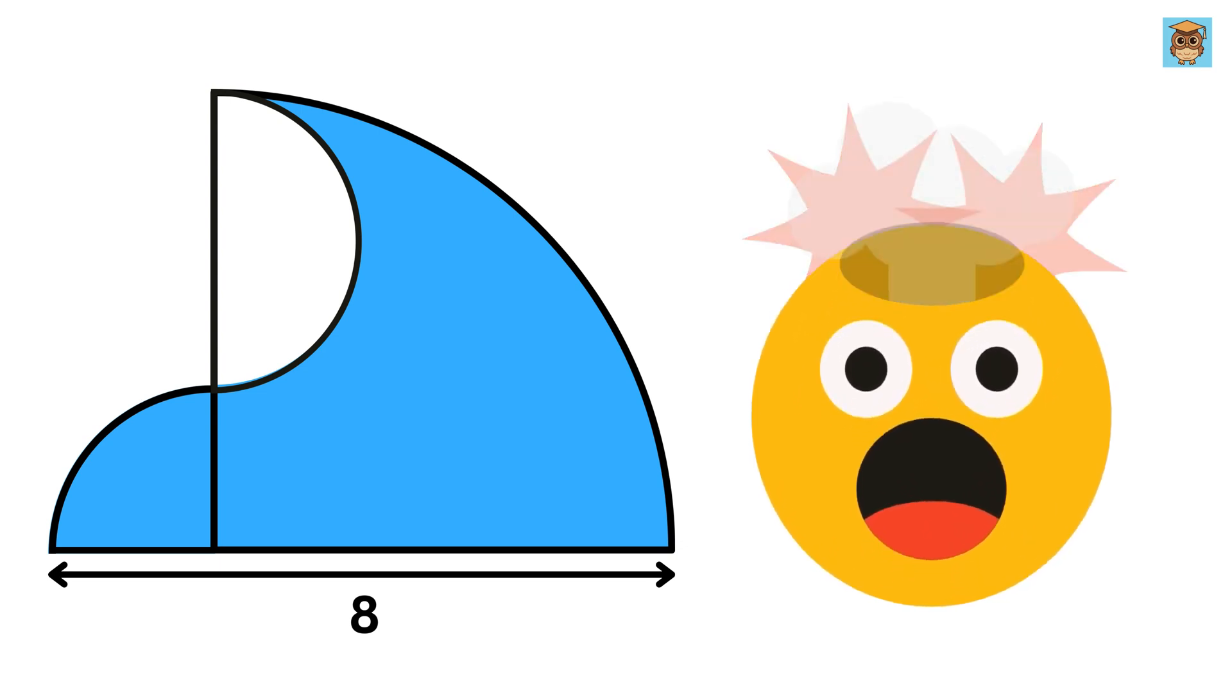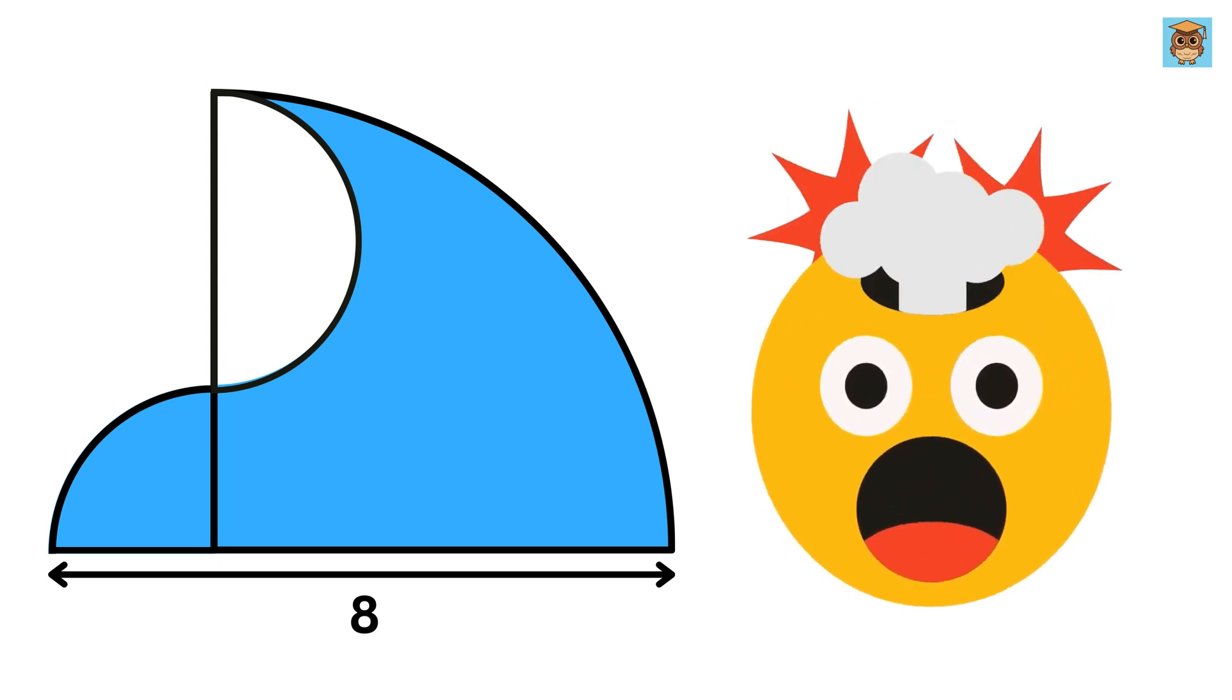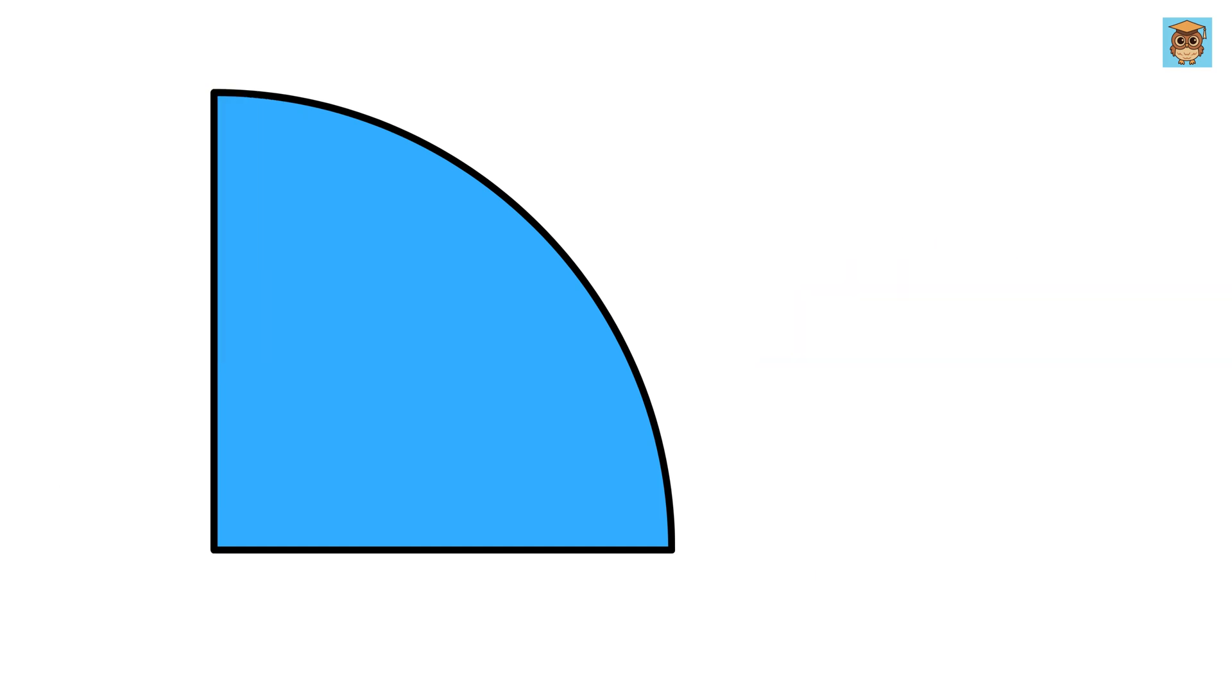This question is going to blow your mind, and I will let you know why at the end of this video. We have a quarter circle which has a hole in it, and it is of the semicircle shape.